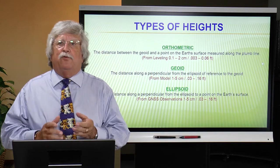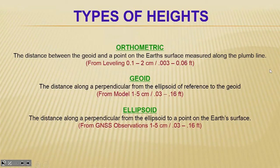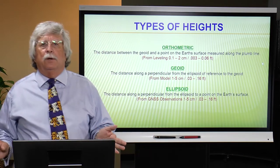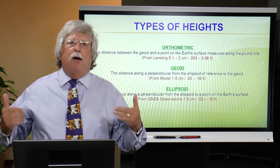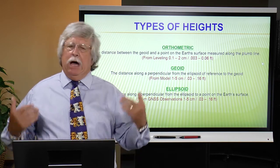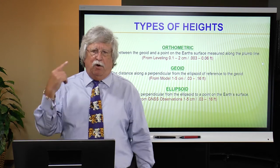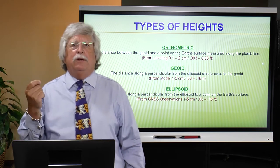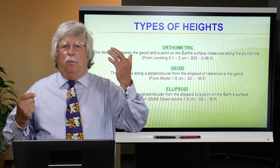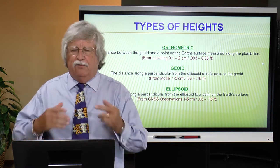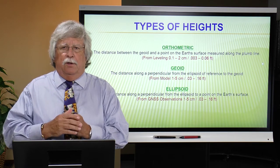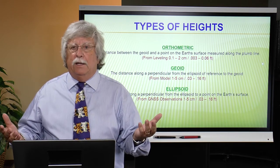The ellipsoid height is the height that comes directly from a GNSS observation. GPS/GNSS is a three-dimensional coordinate system — latitude, longitude, and ellipsoid height. But that ellipsoid height has nothing to do with the Earth's gravity field; water does not necessarily run downhill in ellipsoid heights. So if I'm going to use GNSS to capture height information, I'm starting with an ellipsoid height, and then I must apply the geoid model — the difference between the ellipse and the geoid — to hopefully get a good quality orthometric height.